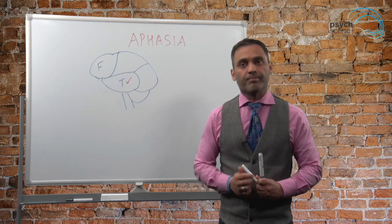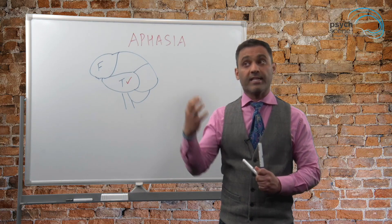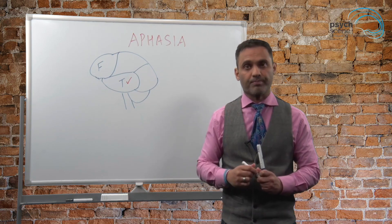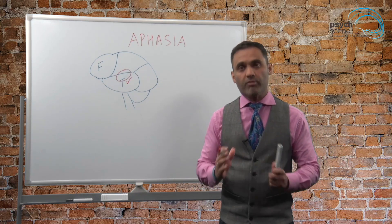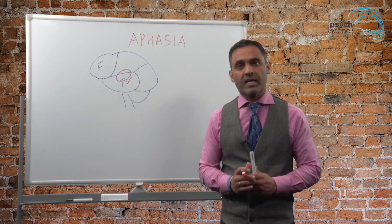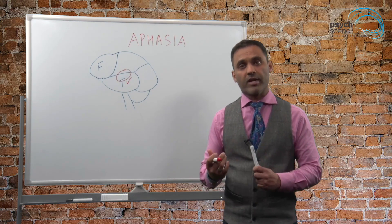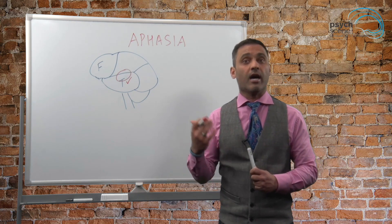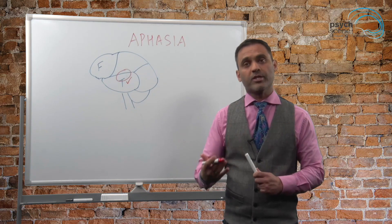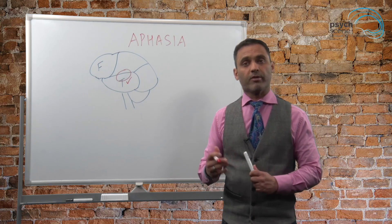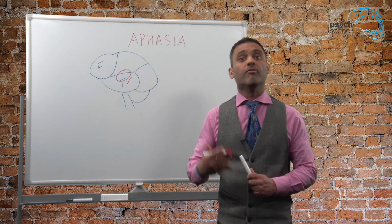Whenever we hear sentences or words, the first step is to understand what we're listening to. Conveniently, the posterior superior temporal lobe is the area known as the Wernicke's area. The function of Wernicke's area is comprehension and understanding. So if there was a stroke or damage to the brain affecting this posterior superior temporal lobe or the Wernicke's area, then we would have an aphasia known as Wernicke's aphasia.